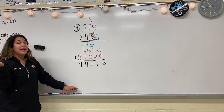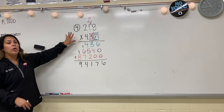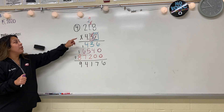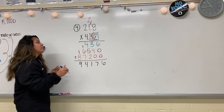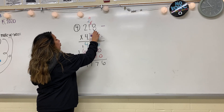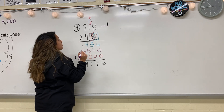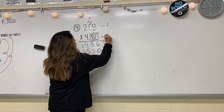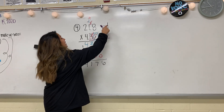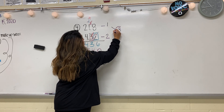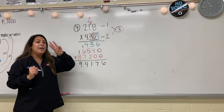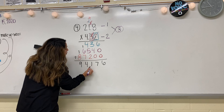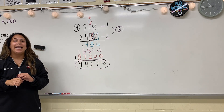Now I'm done solving, but I'm not done with my answer because if I'm working with decimals, my answer has to have a decimal. I'm going to look at each number and see how many digits are behind the decimal point. For 21 and eight tenths, I have one number behind the decimal point — I'll put one. For four and 32 hundredths, I have two numbers behind the decimal point — I'll put two. One plus two is three, so I need three numbers behind the decimal point in my answer. Starting from the right and working left — one, two, three — I'll put my decimal point. And that is our answer: 94 and 170 thousandths.